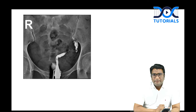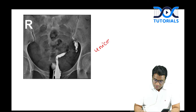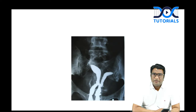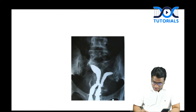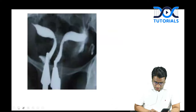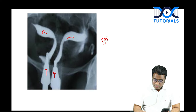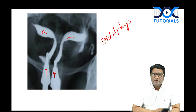Because infertility was mentioned and the intercornual angle was narrow, the better answer is septate uterus — septate uteri are more associated with infertility. Another image showed unicornuate uterus. If you see contrast opacification of both cornua with two separate vaginal openings, that is uterus didelphys — two separate vaginas with two separate uterine cavities.